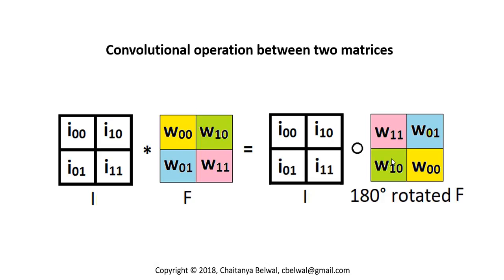And then once we do a 180 degree rotation we do a simple dot operation on the matrix. So what we generally do we just multiply I00 with W11, I10 with W01, I01 with W10, and I11 with W00, and we sum all of them to give us a single element.